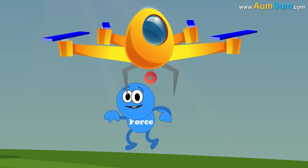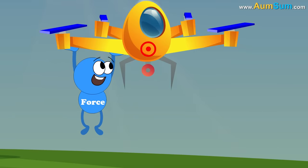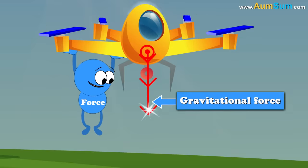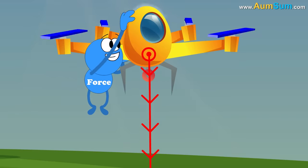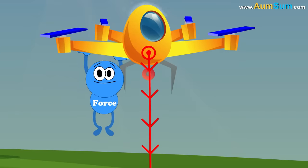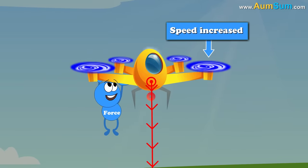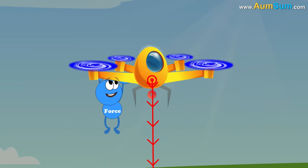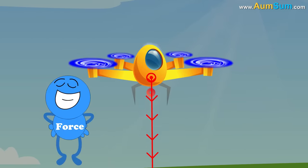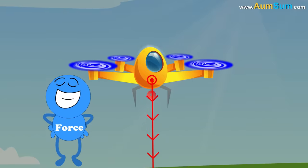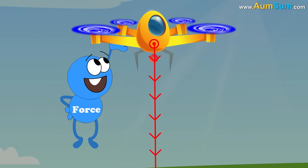If the net force generated by the rotors in pushing the drone up is equal to the gravitational force pulling it down, then the drone starts hovering in the air. If the speed of rotation of the rotors is increased such that the net force generated becomes greater than the gravitational force, then the drone starts going up — as in climbing.